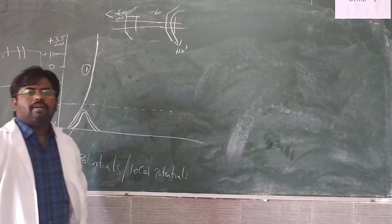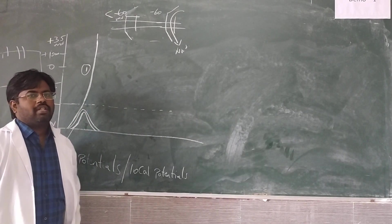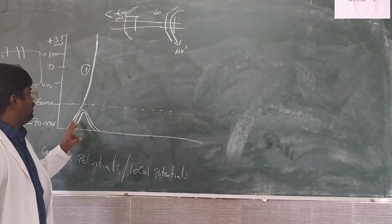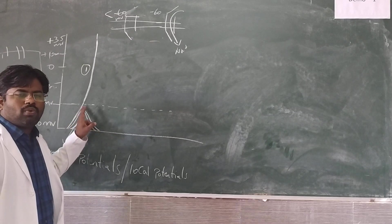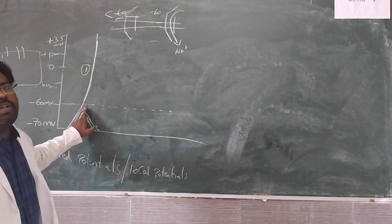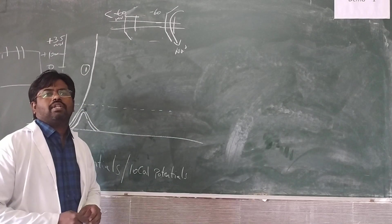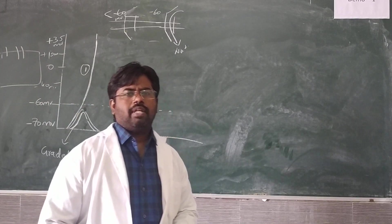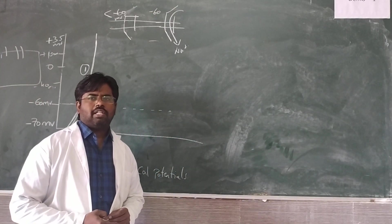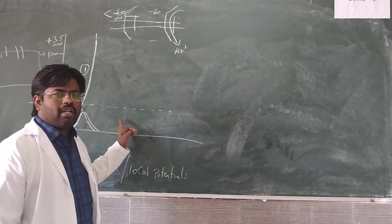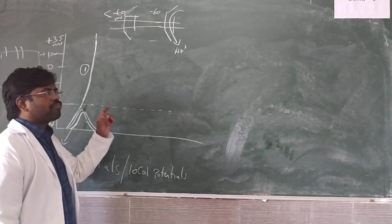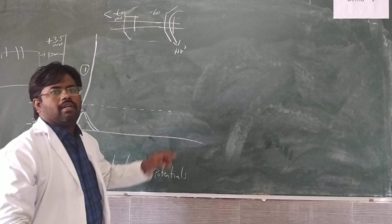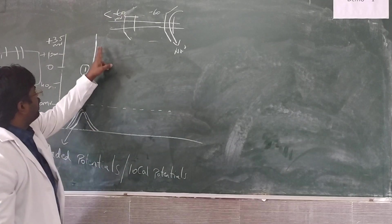As of now, we have discussed the depolarization phase. In the depolarization phase, once the stimulation reaches the threshold level, the sodium gates — initially the mechanical sodium gates — will be opened, then the voltage-gated sodium channels will be opened. That leads to a sudden rush of sodium flowing into the cell, which finally leads to depolarization.